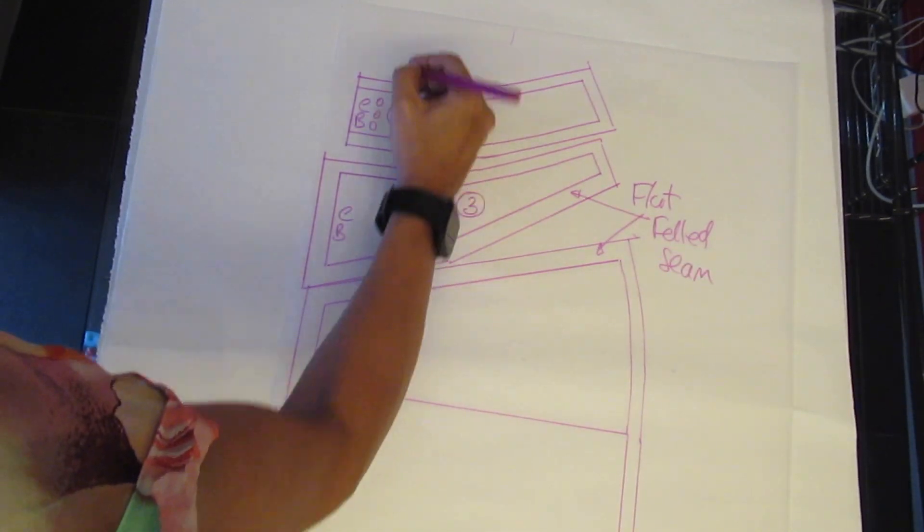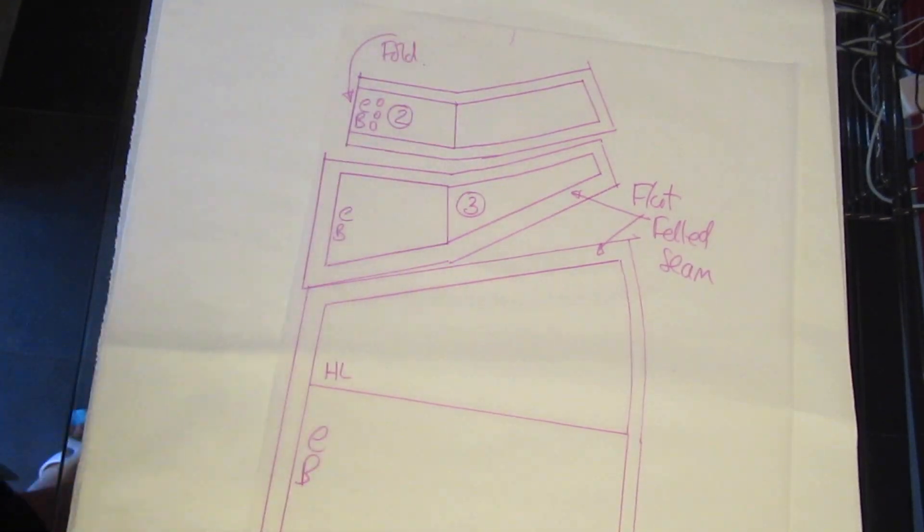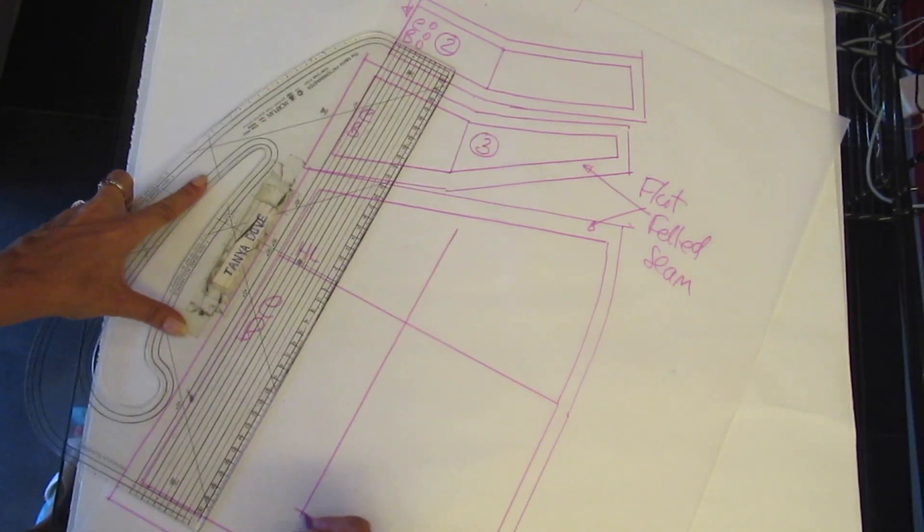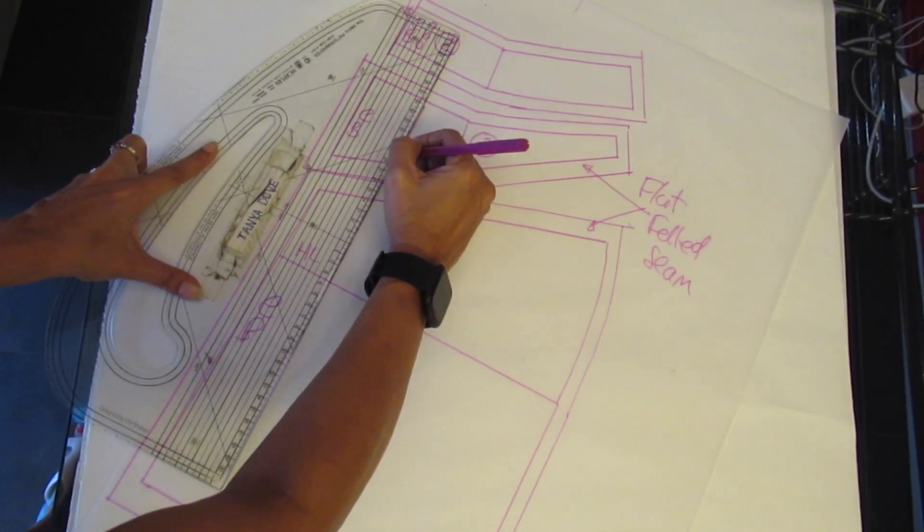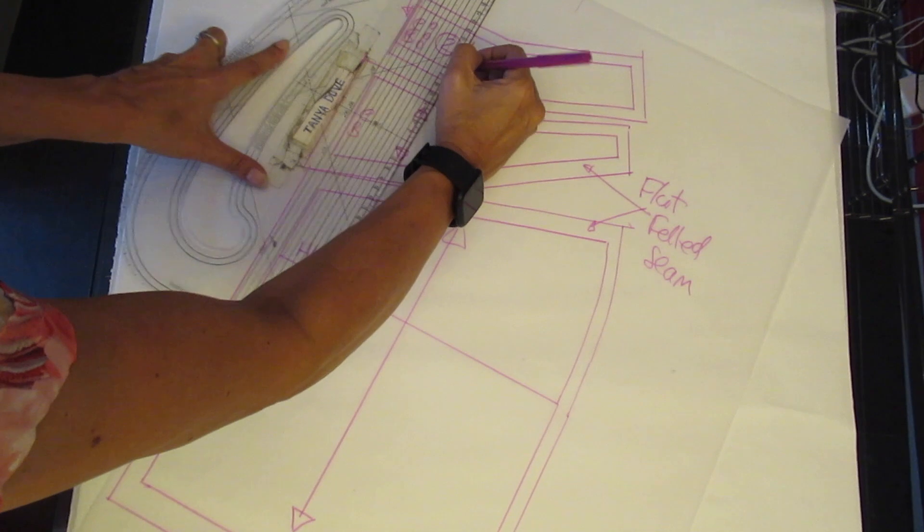Showing you where the flat felled seams are. The three circles show that you cut on the fold. Draw the grain line on each pattern piece which is parallel to the centre back.